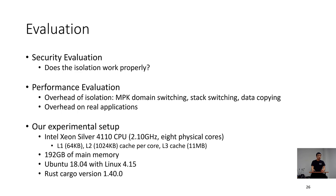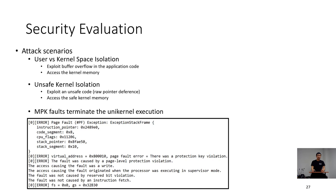This is our experimental setup. For the security evaluation, we simulate attack scenarios. For user isolation, we exploit buffer overflow in the application and try to access the kernel memory. For unsafe kernel isolation, we exploit vulnerable unsafe code to access the safe kernel memory. For both scenarios, MPK fault terminated the unikernel execution, and the screenshot below shows the MPK fault and printed information.